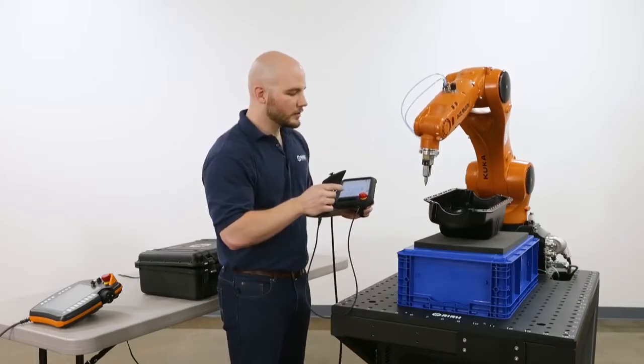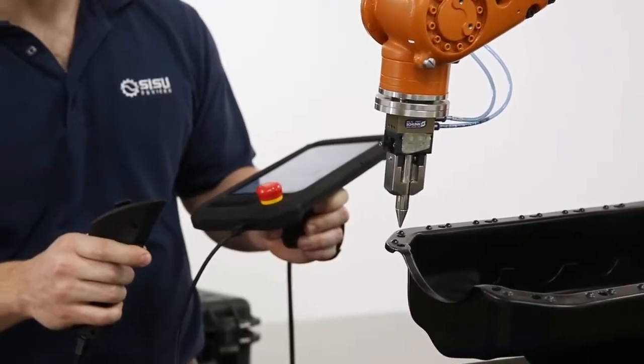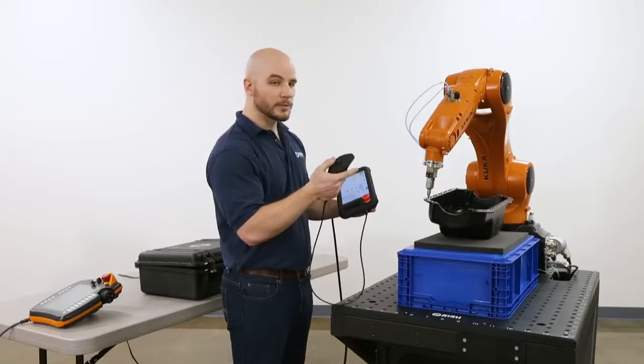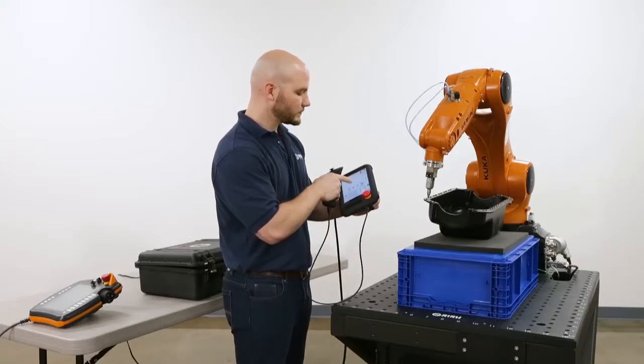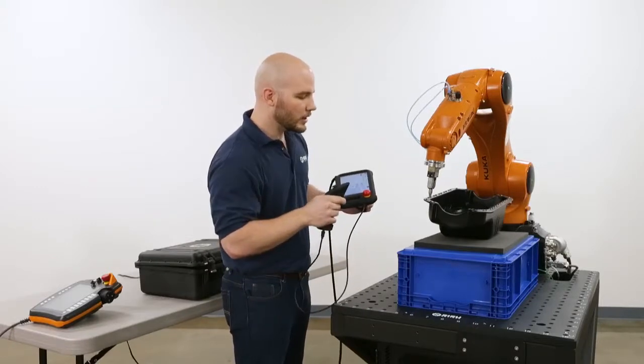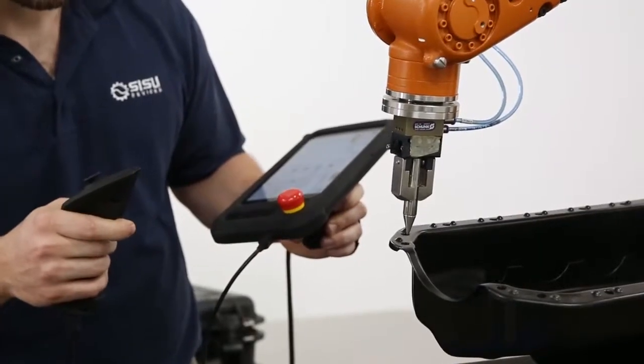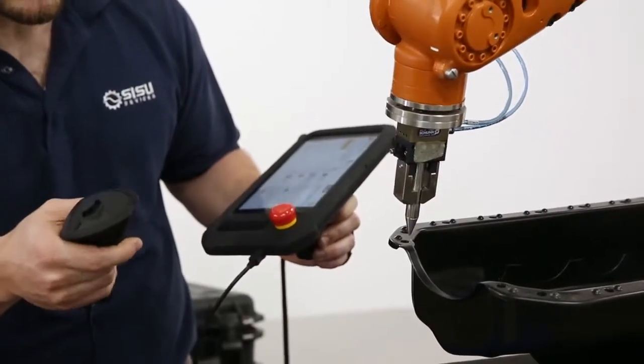Just move the end effector to the desired position and press a button on the controller or the pendant to save the point. I'll add a couple of point-to-point moves as well as a path move along this surface.